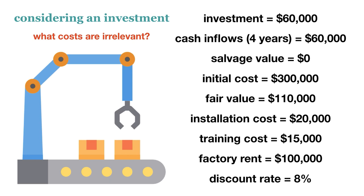There are installation costs of $20,000 and training costs of $15,000. The rent paid for the factory is $100,000 a year. The initial cost of $300,000 is not factored into the decision-making process as it is a sunk cost — it has already been paid, cannot be recovered, and has no impact on how much money the equipment can generate in the future. The $100,000 per year rent on the factory is also not relevant, as it is not incremental to this decision; whether we sell the equipment or invest in it, the company will still continue to pay rent.